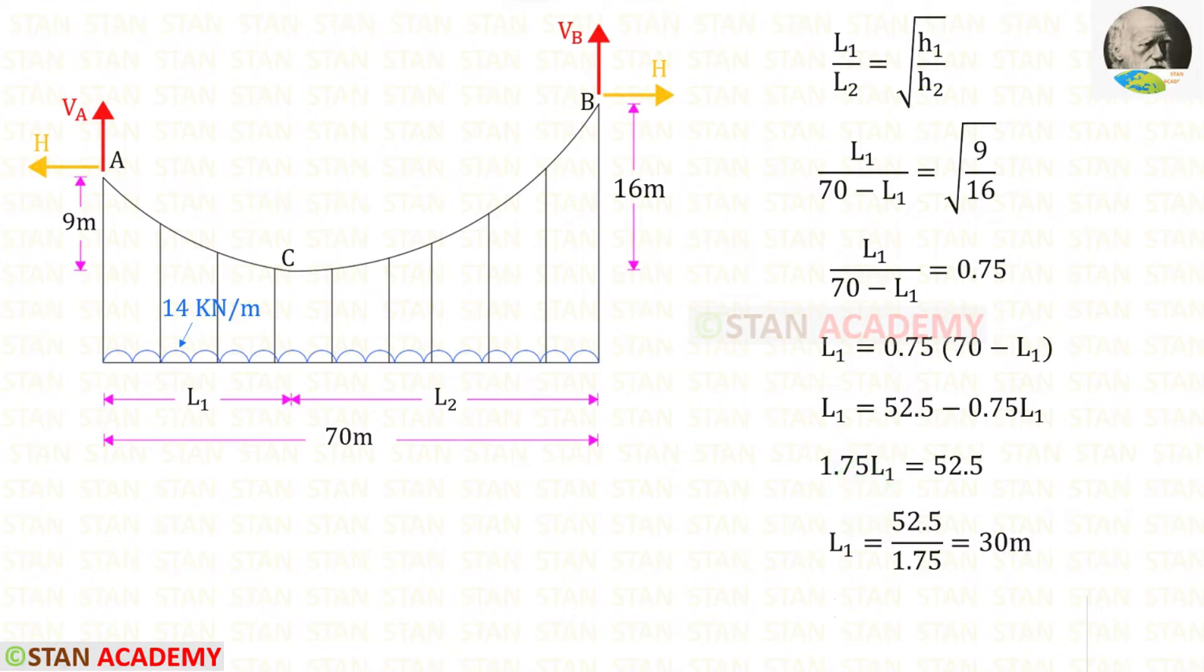Then we can take 1.75 on the right side. So it will come in the denominator. Finally for L1 we will get 30 meter. We know that L2 is 70 minus L1. So finally for L2 we will get 40 meter.